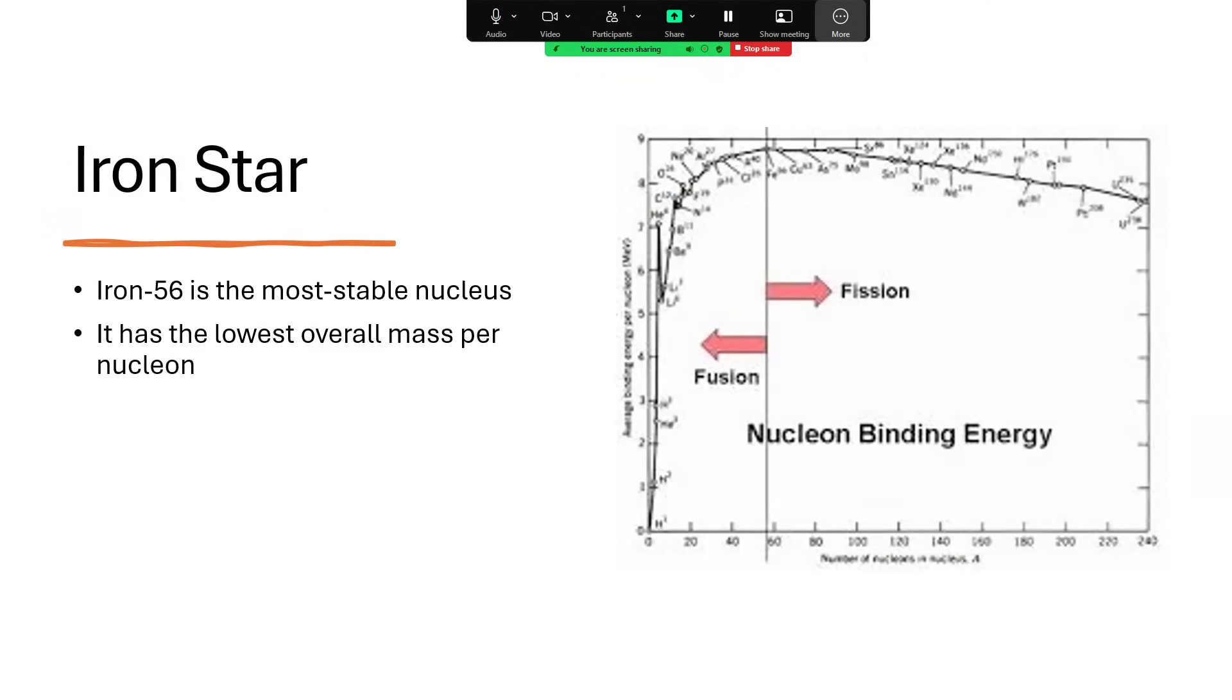Iron-56, to be precise, is the most stable of all possible nuclei. The binding energy for neutrons and protons held together in iron-56 is the greatest. Isotopes and nuclei less massive than this tend to want to reduce their energy by forming iron, and heavier ones want to do it by splitting up. You can see this graph here, starting at hydrogen on the left and going all the way to heavy elements such as uranium on the right, and the peak of the graph is iron.